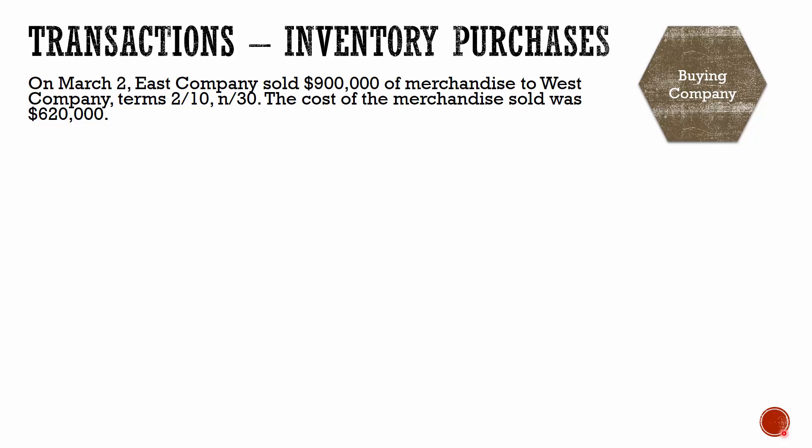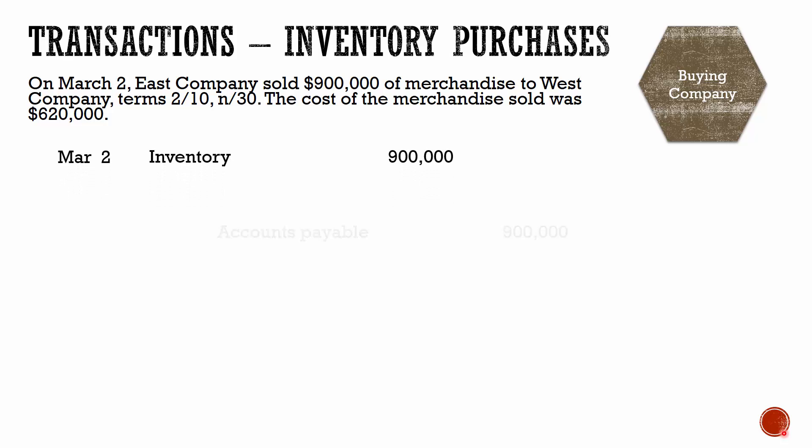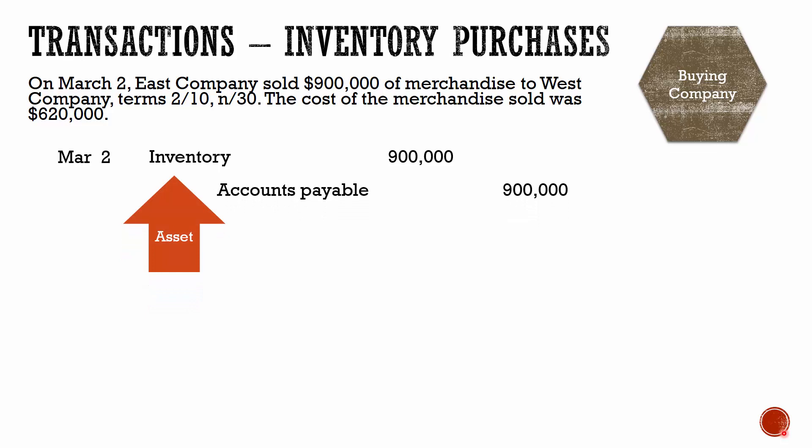From West Company's perspective, they are purchasing $900,000 worth of merchandise. So on March 2nd, they would debit inventory for $900,000 and credit accounts payable for $900,000. Inventory is an asset account, so we're increasing our asset here with a debit, and we're increasing accounts payable with a credit.